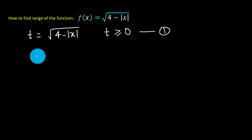Squaring both sides of this equation, we get t squared is equal to 4 minus absolute value of x. This implies absolute value of x equals 4 minus t squared.